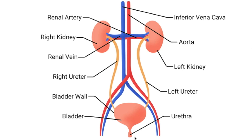So with a UTI, when there is bacteria around the area of the urethra, which is where urine leaves your body, that bacteria can spread up into the urethra and then make its way up into the bladder, causing a bladder infection.